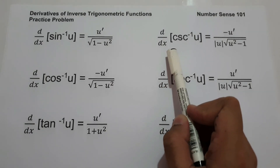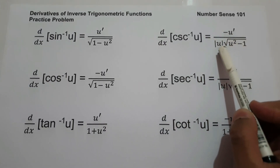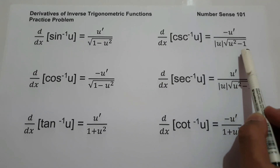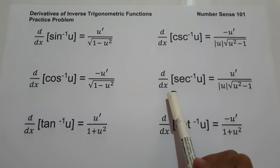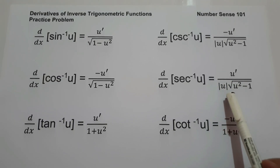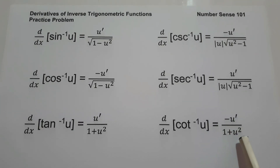The fourth one is the derivative of arc cosecant u is equal to negative u' over absolute value of u times square root of u squared minus 1. The derivative of arc secant u is equal to u' over absolute value of u times square root of u squared minus 1. And the last one is the derivative of arc cotangent u equals negative u' over 1 plus u squared. So these are the formulas you need to remember to find the derivatives of inverse trigonometric functions.